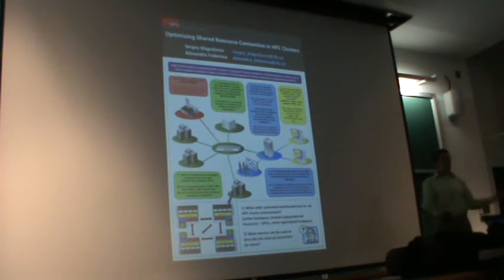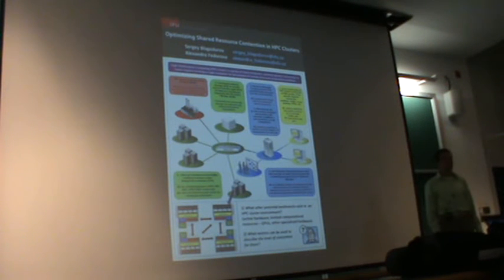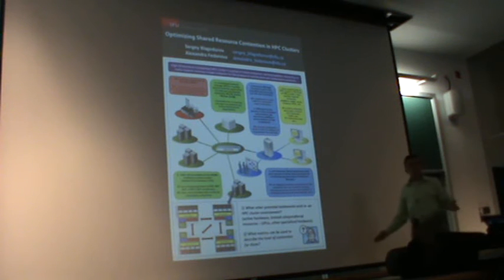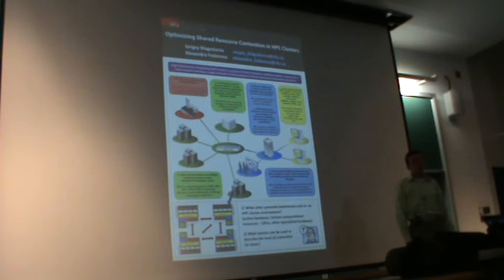So usually, for example, if you're running an MPI application, it can be as parallel as several hundreds of processes. For example, in WestGrid — which is a network of clusters for research in Canada, and SharcNet is a part of this network — there are a lot of different computational capabilities there.